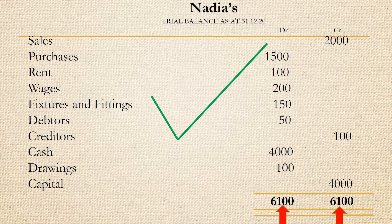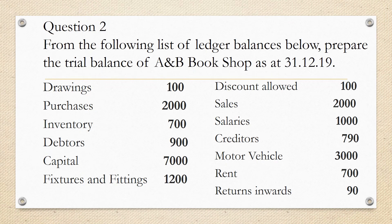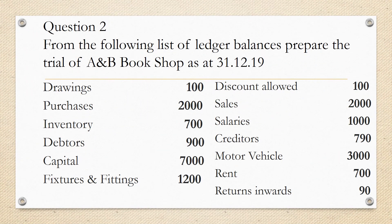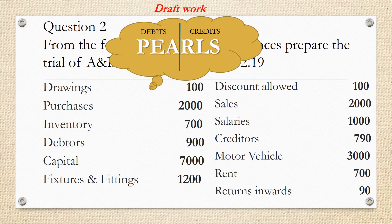Here's a more challenging question. From the following list of ledger balances below, prepare the trial balance of A and B Bookshop as at 31 December 2019. Now let's look into the solution. The first step is to draw the trial balance with a name and the date on which it was made, and also put the debit and credit headings for the two columns. I'm going to do my draft work here and using PEARLS I am going to determine the nature of the balances of the listed items.